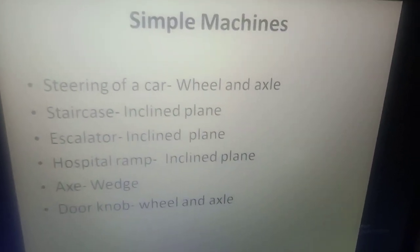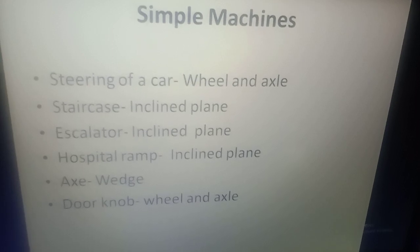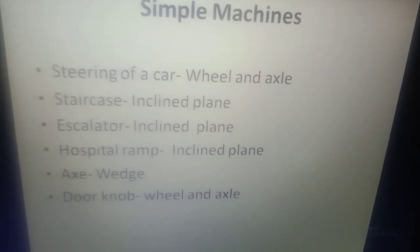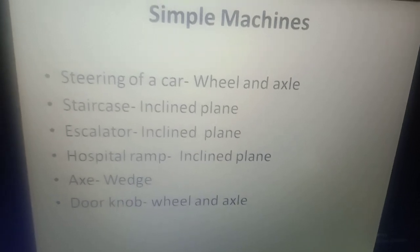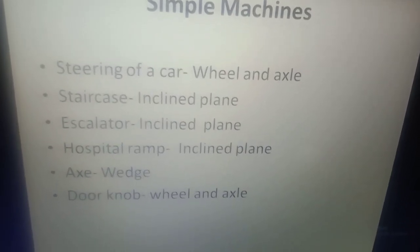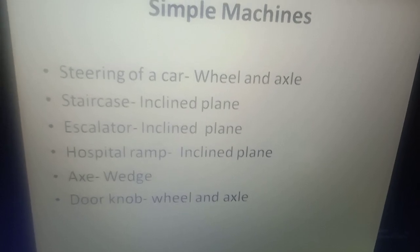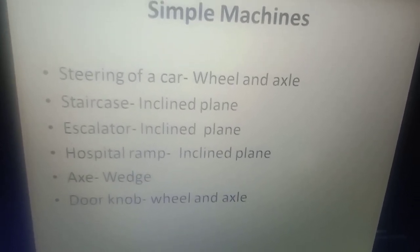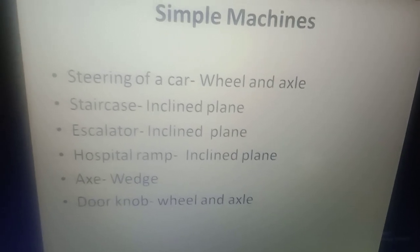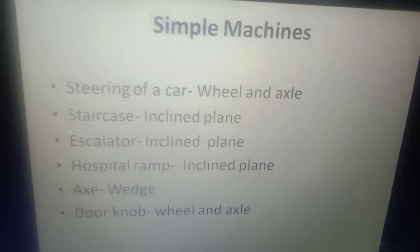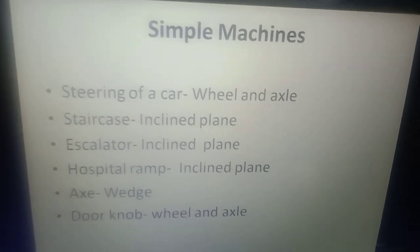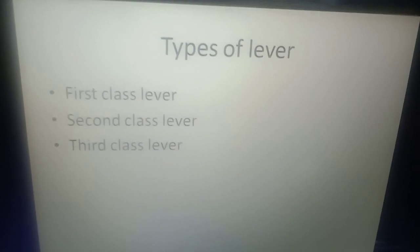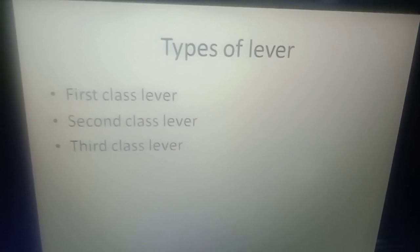Simple Machines: The steering of a car is an example of wheel and axle. A staircase and escalator are examples of inclined plane. A hospital ramp is also a form of inclined plane. An axe is a form of wedge. A doorknob is a form of wheel and axle.